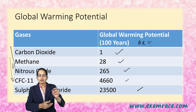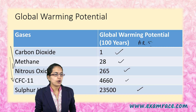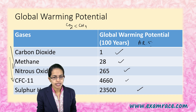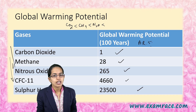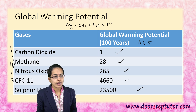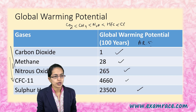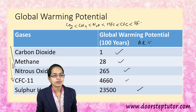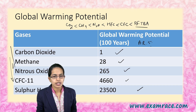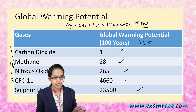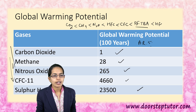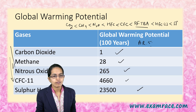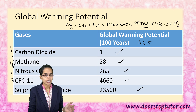If we look at the correct order, you have carbon dioxide at the lowest, followed by methane, followed by nitrous oxides, followed by hydrofluorocarbons, chlorofluorocarbons, followed by PFTBA. This is very important — we'll discuss that in a while. Then you have hydrofluorocarbons-23, and finally sulfur hexafluoride.